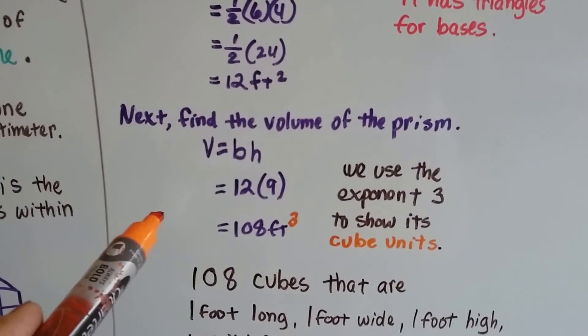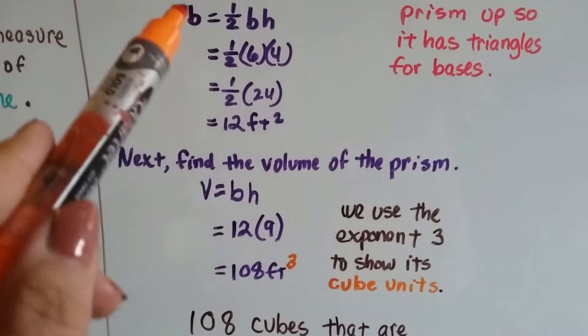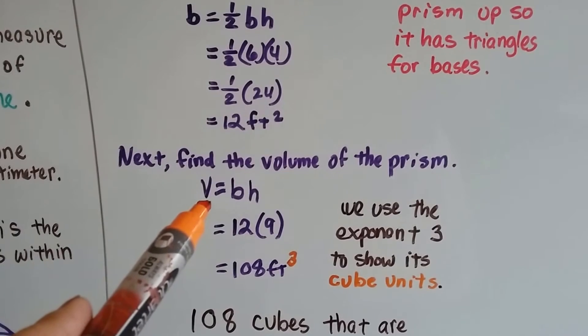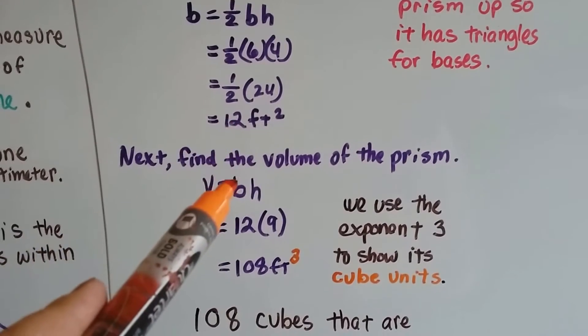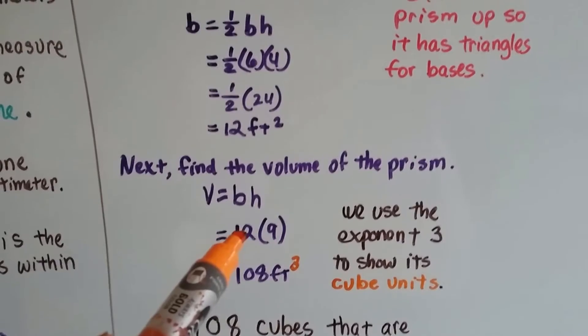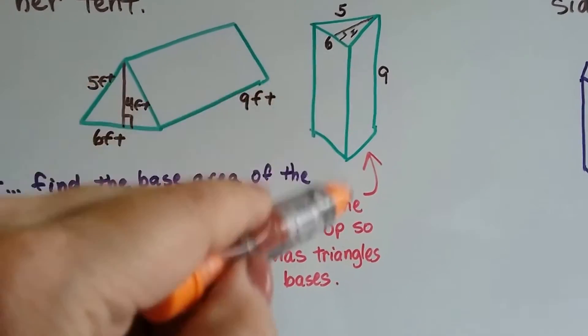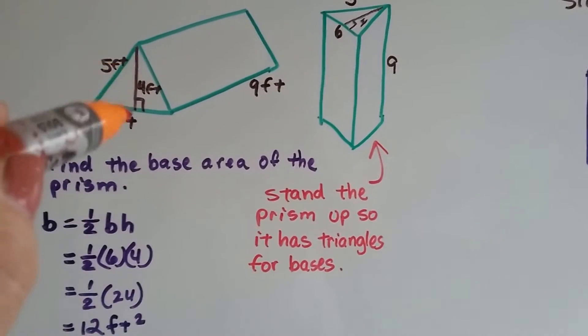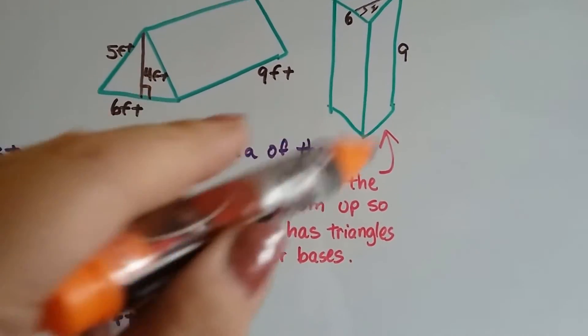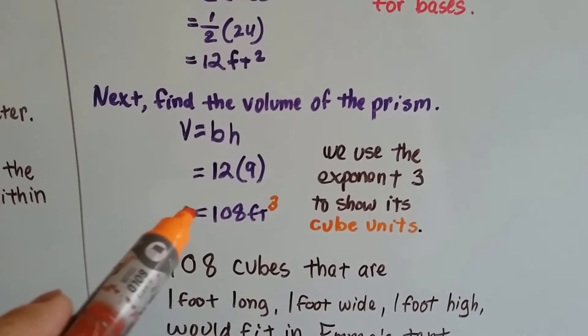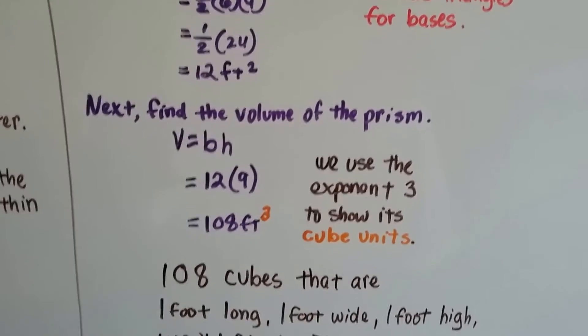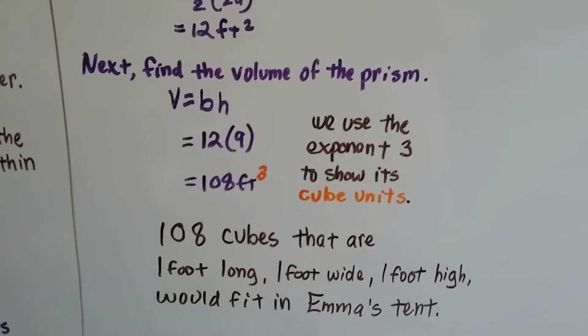Now we find the volume of the prism. Now that we have the base, we can plug that into the volume of the prism formula, V equals BH. So the volume is going to equal twelve times the height. And the height, because we've got it standing up this way now, is a nine. It's not the four. We did that for the base. So we do twelve times nine, which means the volume of this prism is a hundred and eight feet cubed. See the little three? We use the exponent three to show its cubic units.